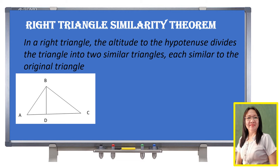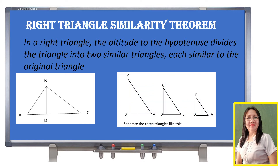To show the similarity of the original triangle to the two smaller triangles, let us separate the three triangles. Triangle ABC is the original triangle. When divided by segment BD, we get triangle BDC and the smallest one, triangle ADB. So triangle ABC is similar to triangle BDC, and also similar to triangle ADB.